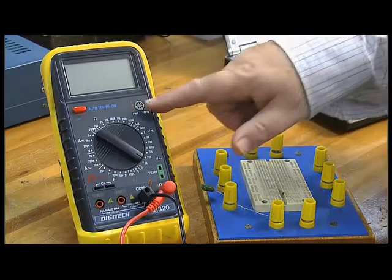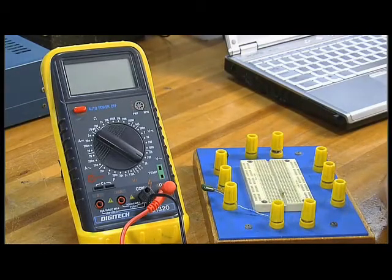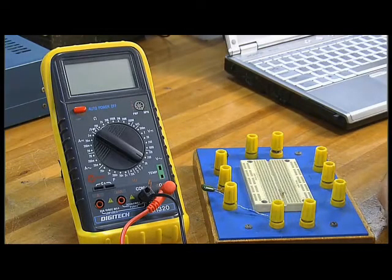Now this is called a multimeter. It's called a multimeter because it can measure resistance, voltage, and current.